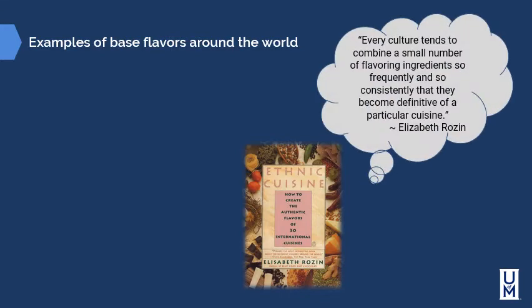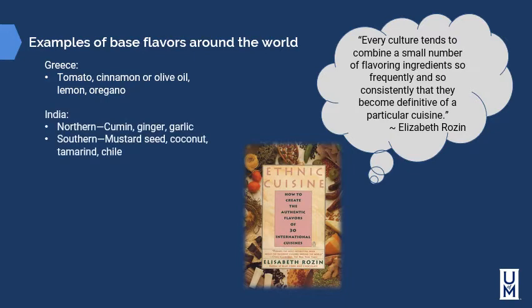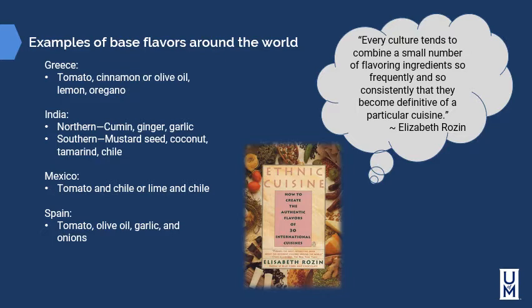Every culture tends to combine a small number of flavoring ingredients so frequently that they become distinctive of a particular cuisine. In the United States we base our flavors on the French mirepoix — carrot, celery, and onion — and also the trinity of South Louisiana. In Greece, tomatoes and cinnamon or olive oil, lemon, and oregano are base-level flavors. In northern India it may be cumin, ginger, and garlic; in southern India, mustard seeds, coconut, tamarind, and chili. In Mexico, tomato and chili or lime and chili are common. In Spain, the sofrito includes tomatoes, onions, garlic, and olive oil simmered together. In China, ginger, scallions, and garlic are the base-level flavors.